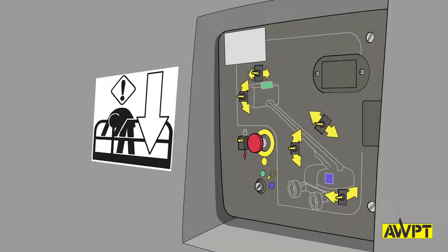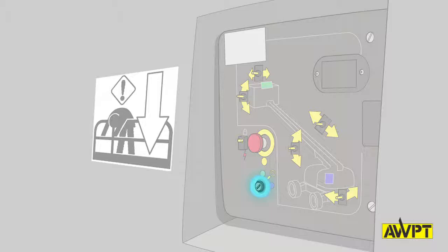Now check that the machine does not function without the key. For example, this can be done by checking that the key switch works and then that the other controls do not work with the key in the off position or with the emergency stop out. Then remove the key before proceeding with the inspection.